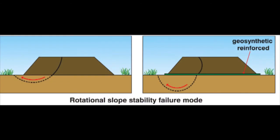Rotational stability, also known as global stability, is the most common failure mode. Part of the embankment simply drops away because the weight of the soil is too much for the subgrade to bear. This generally occurs after severe storms when rain infiltration affects the soil properties.